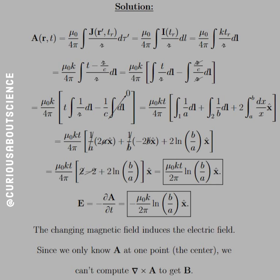The t gets brought outside as a constant. So we have μ₀kt/4π, and I'm labeling the breakdown as: integral 1 — which is (1/a) dl over script_r for the inner arc — plus integral 2 — (1/b) dl over script_r for the outer arc — plus 2 times the integral from a to b of dx/x in the x-hat direction. The reason we double it is because we run from inside to outside and outside to inside, so we flip the bounds and pick up a factor of 2.